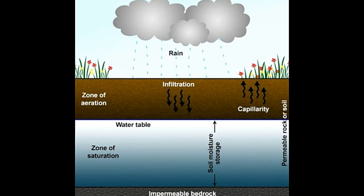The zone of aeration on top followed by the zone of saturation below is the standard configuration which results in the formation of an optimum underground water storage. However, varying geological conditions at different places can give rise to less than ideal underground water reserve formations due to changes in the location and width of the zones. In regions where there is an impermeable rock in the zone of aeration, downward motion of water gets restricted, resulting in saturation of the rock present above the impermeable rock. The water in such zones is called perched water.